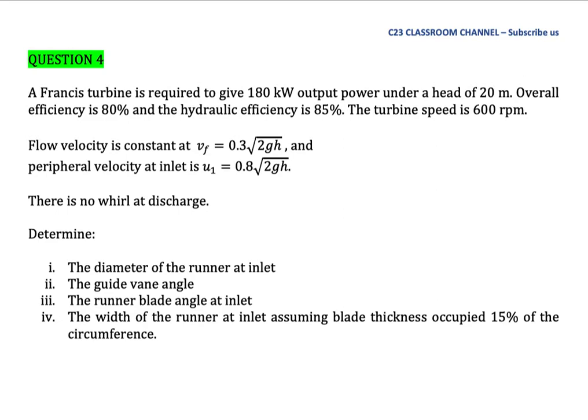The turbine speed is 600 rpm. Flow velocity is constant at VF equal 0.3 square root 2gh and the peripheral velocity at inlet U1 is 0.8 square root 2gh. This equation is only for this question. Please do not remember this equation, it is not suitable for all situations.